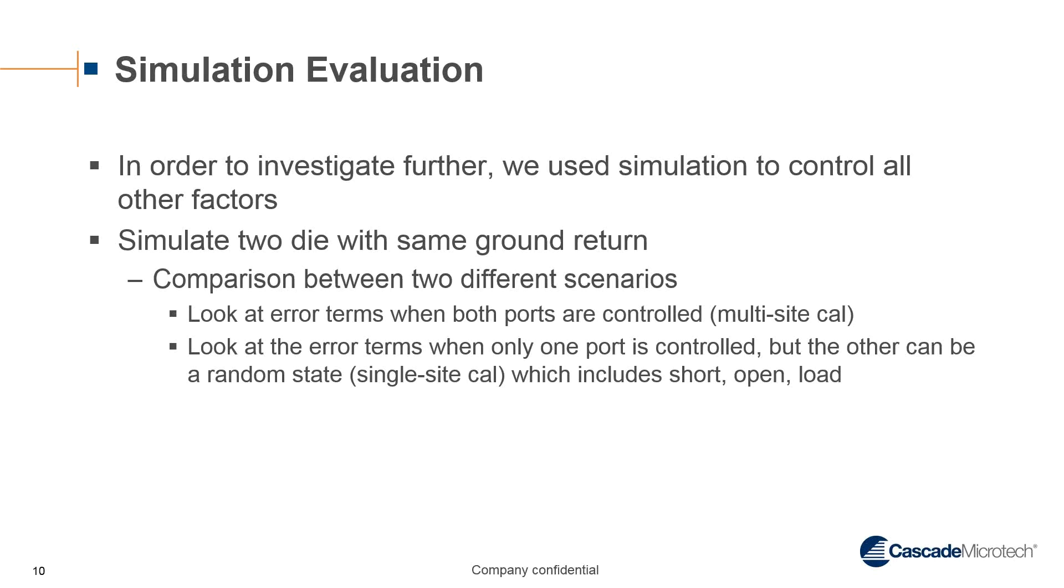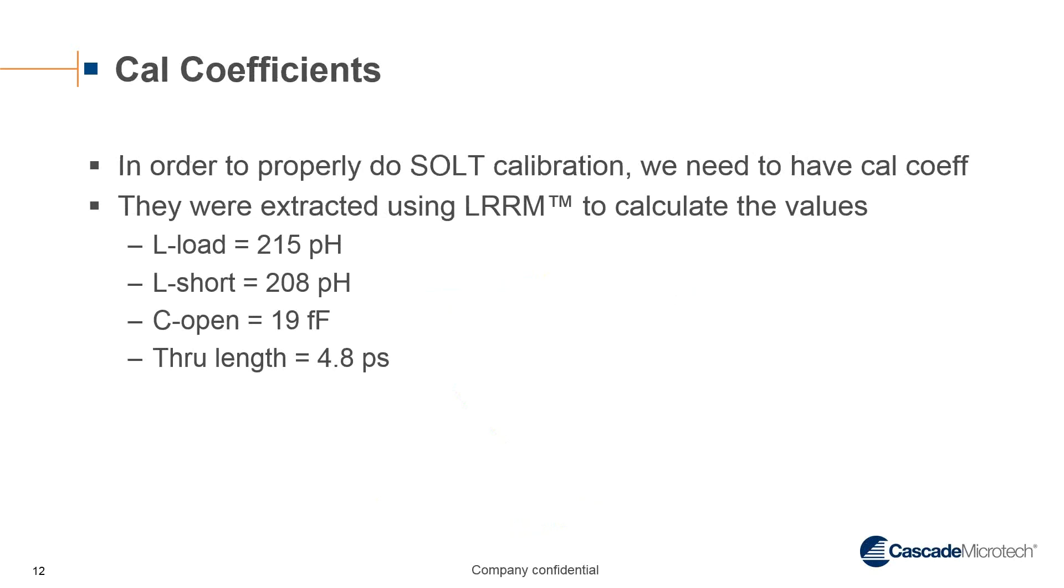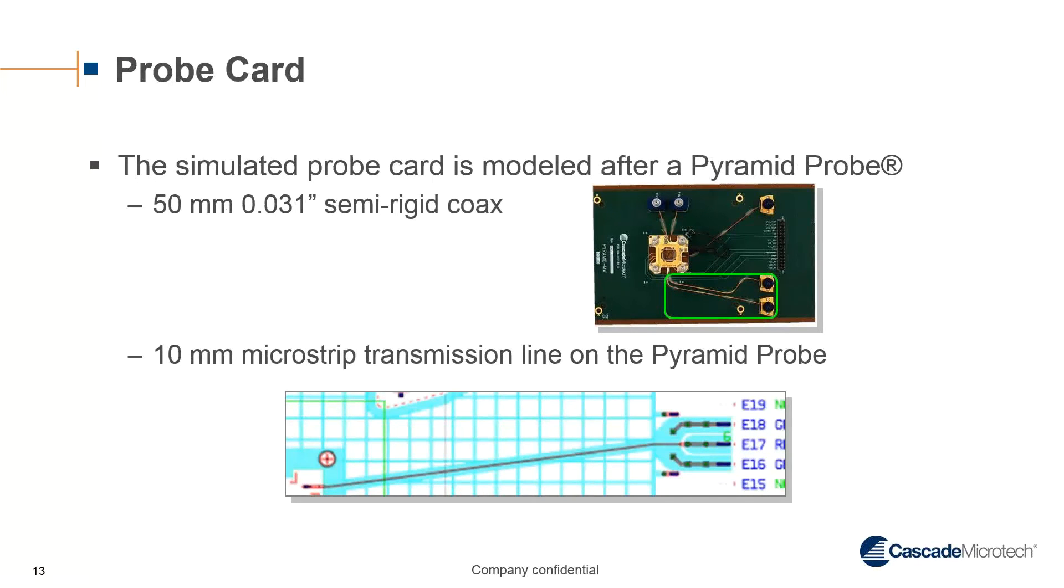This was done for each standard measurement with a random cycling through the other standard, so you would never know exactly what state the other site was in. We also then generated representative measurement parameters for a bandpass filter. This is a filter with a center frequency of 2.6 gigahertz with a 3 dB width of 100 megahertz. For this evaluation, we used SOLT calibration, but in order to do that successfully, we had to generate calibration coefficients. The calibration coefficients were extracted using LRRM to calculate the values of the inductance and capacitance of the various standards.